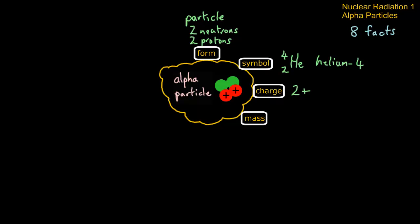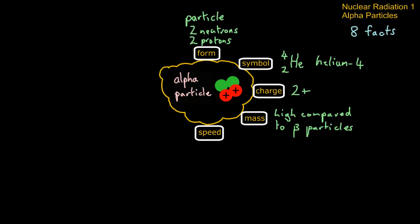The mass of an alpha particle is very high — high compared to other nuclear radiation particles, compared to beta particles. The speed of the alpha particle is about 10% of light speed, which is fairly slow compared to beta particles or gamma rays.